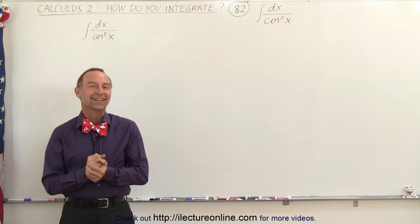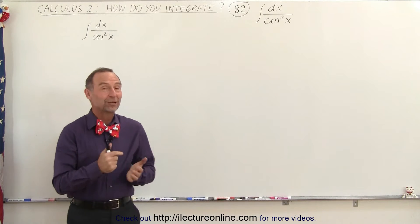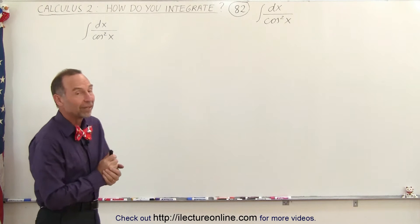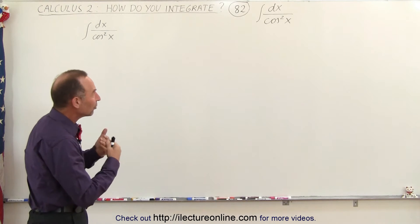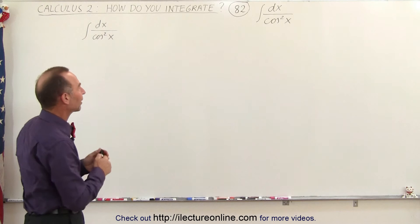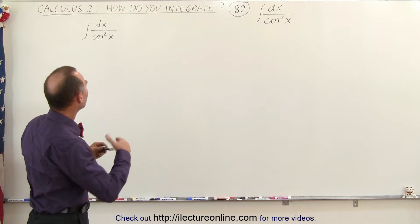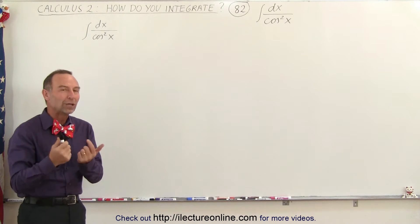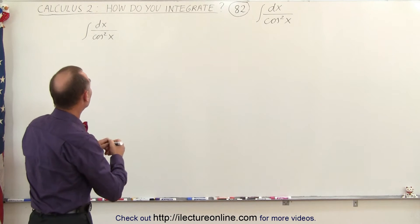Welcome to ElectronLine. Our next attempt here is to integrate the 1 over cosine squared of x integral, and we're going to use the same technique as we used for the 1 over sine squared of x integral. In this case we're going to multiply both the numerator and the denominator by 1 over the sine squared and see what we get.